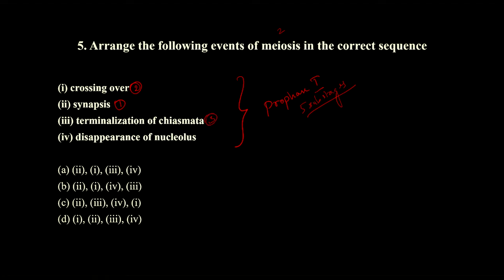Chiasmata is the point at which chromosomes remain paired and in contact with the other chromosome. After crossing over, the chiasmata is terminalized. The fourth event is disappearance of the nucleolus. Synapsis is first in options A, B, and C. Crossing over is second. Terminalization of chiasmata is third. Disappearance of nucleolus is fourth. The correct option is A.